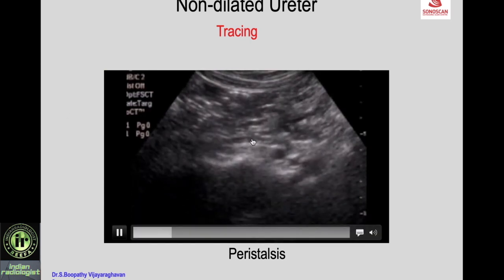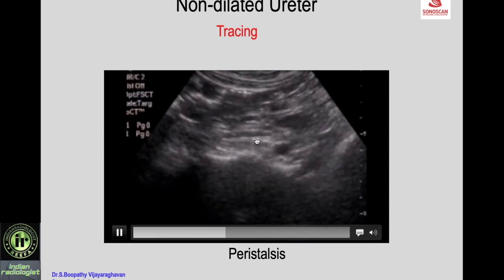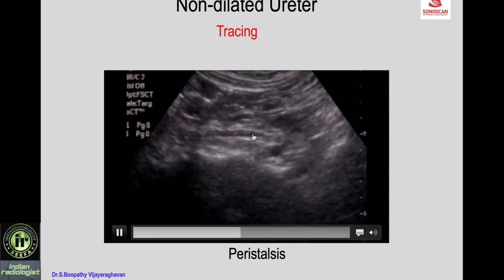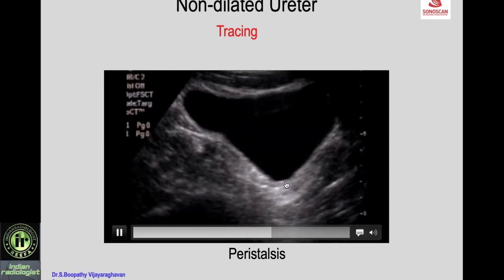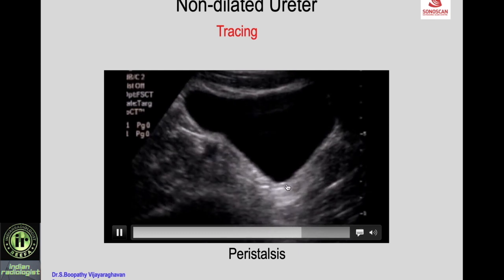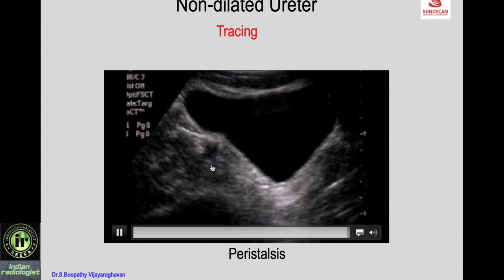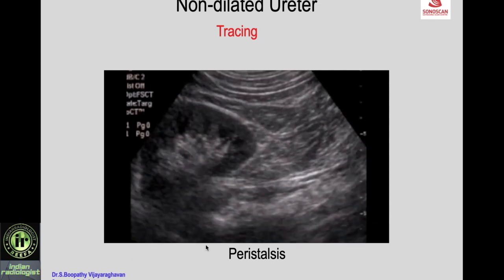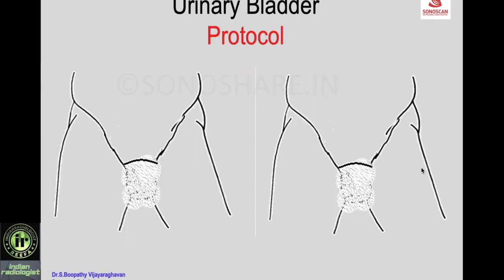You can see the peristalsis of the various parts — the mid ureter and the lower ureter filling up and collapsing. You can also see the upper ureter collapsing. This is how you trace the ureter, and you can now appreciate that the non-dilated ureter can be seen and traced.